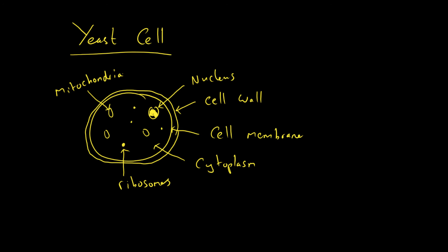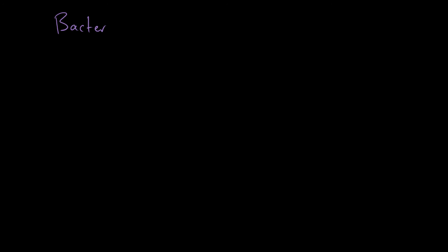Yeast are not animals or plants - they are single-celled organisms that fall under the fungus category. They can reproduce asexually through a process known as budding. You should also know that yeast carry out anaerobic respiration, which we call fermentation - this is why we use yeast to produce bread and to produce alcohol for beer and wine.